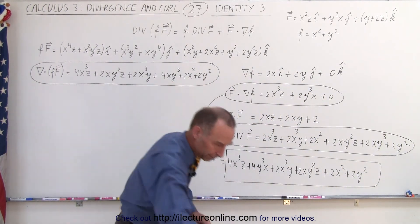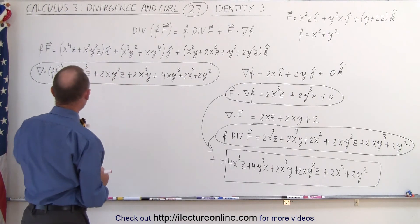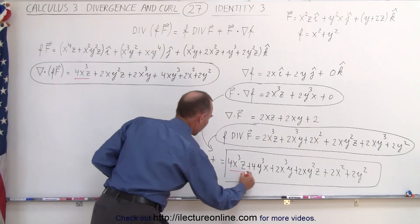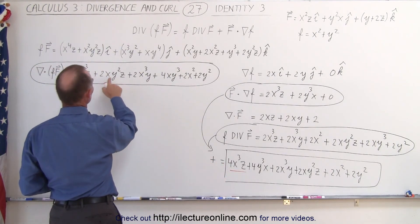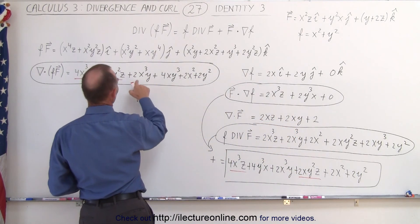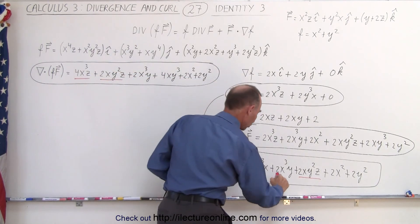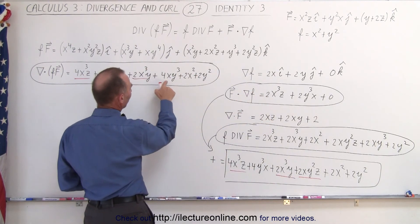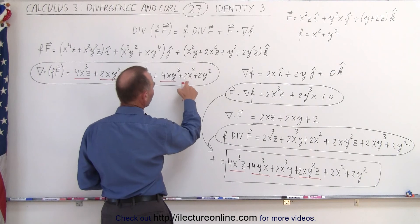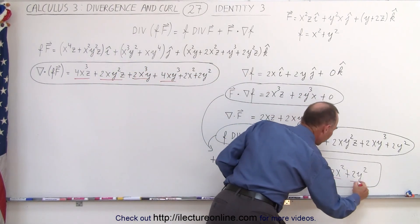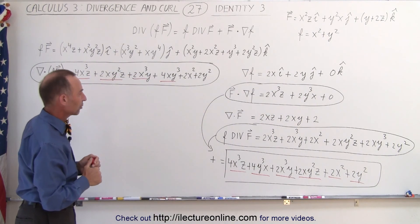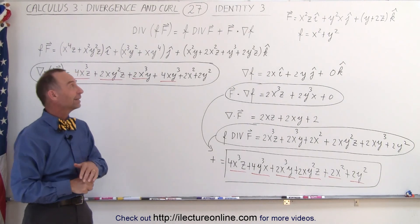Now let's verify both sides match. We have 4x³z on the left and 4x³z on the right — same. We have 2xy²z on both sides — same. We have 2x³y on both sides — same. We have 4xy³ on both sides — same. And 2x² + 2y² on both sides — same. We've shown through this example that the identity holds. That's what we mean by identity number three.